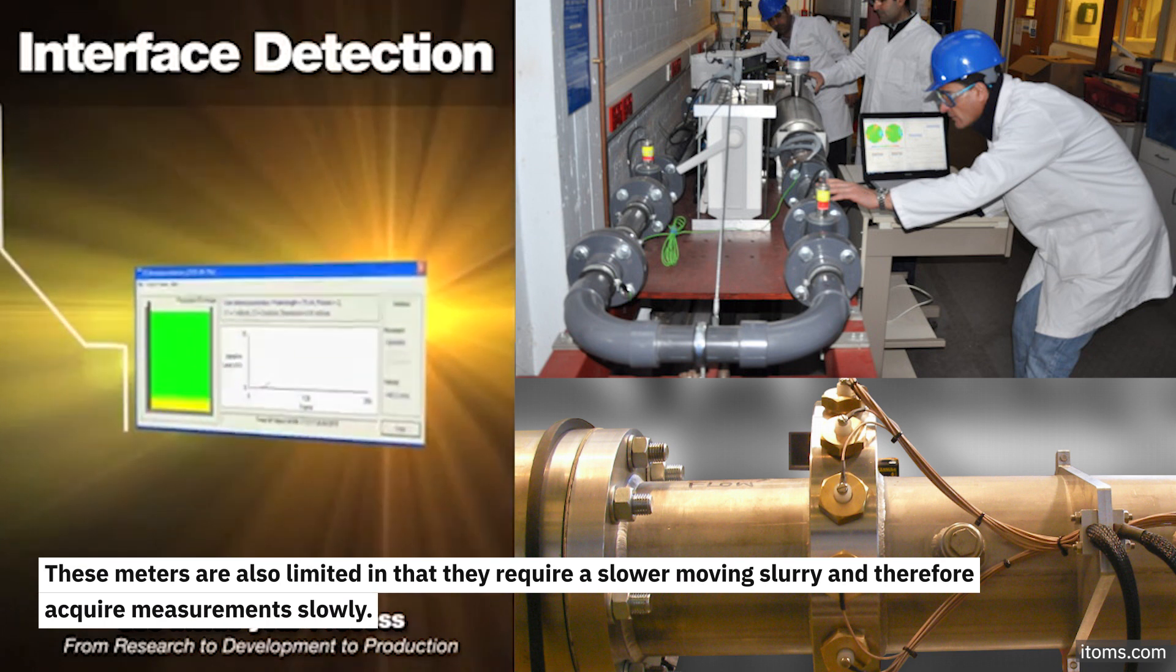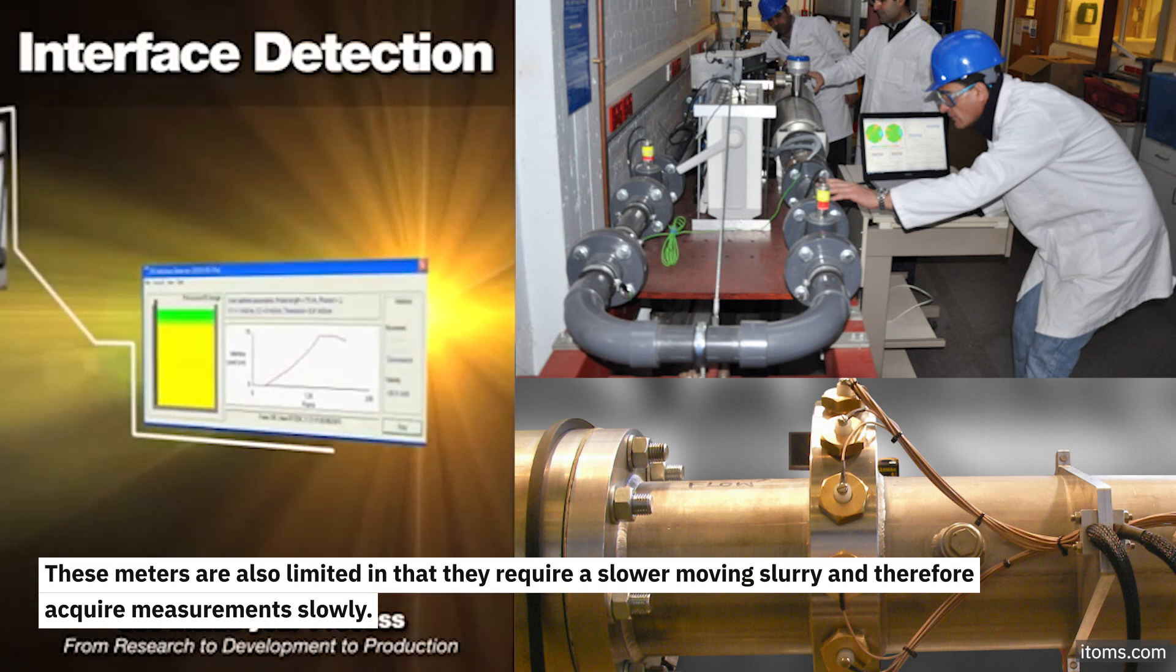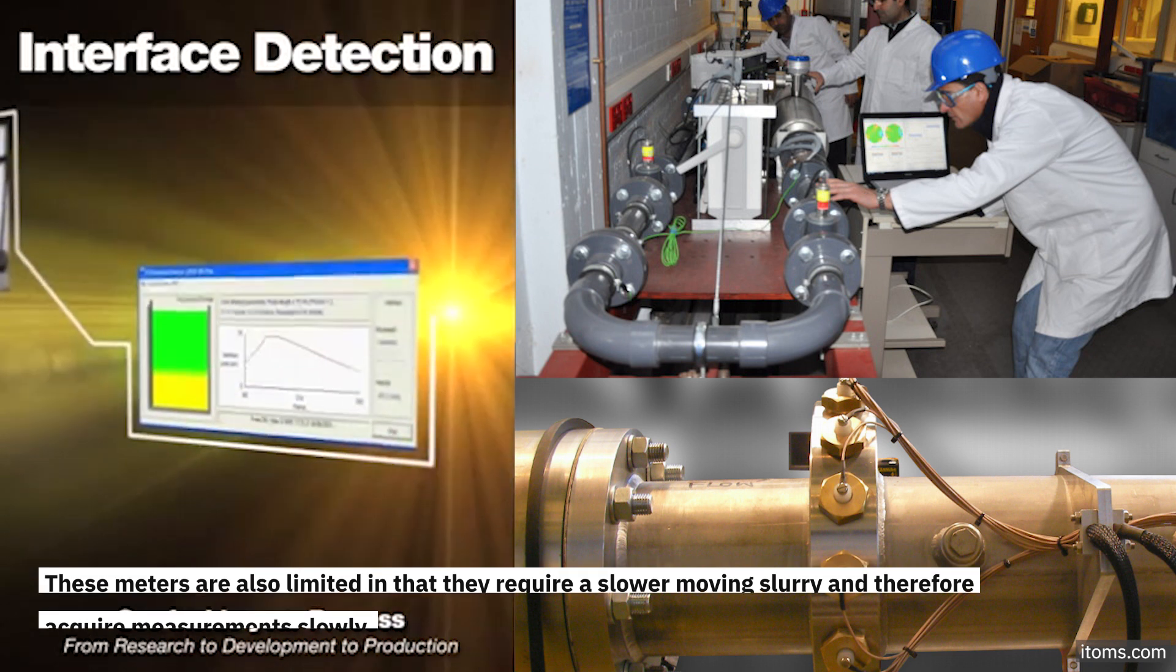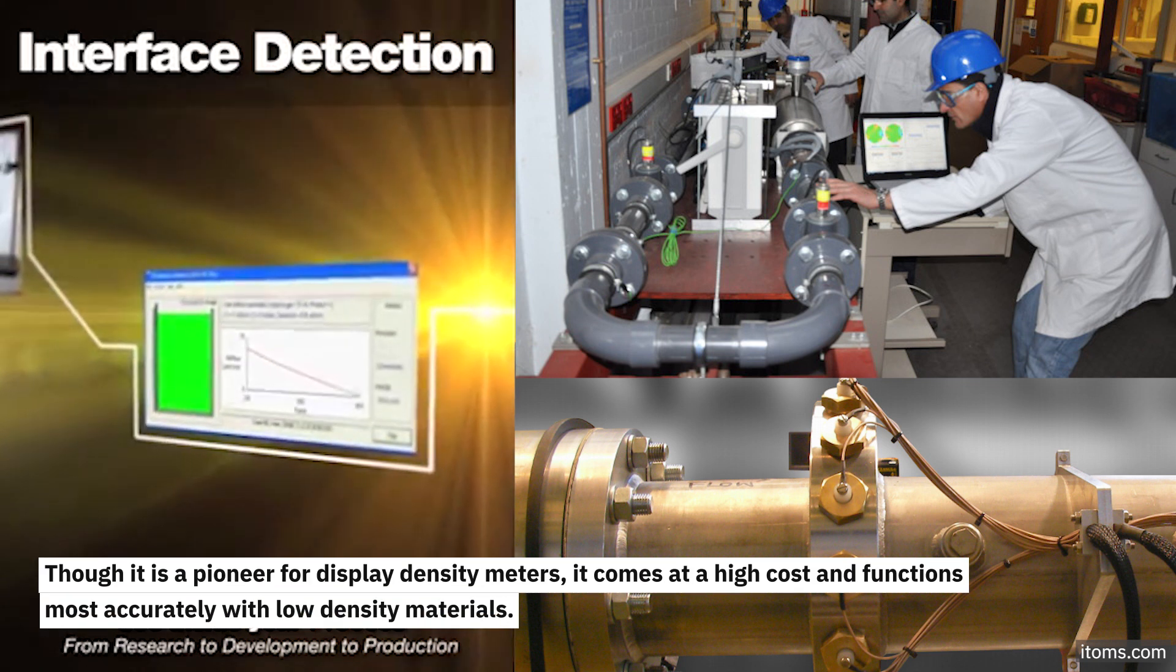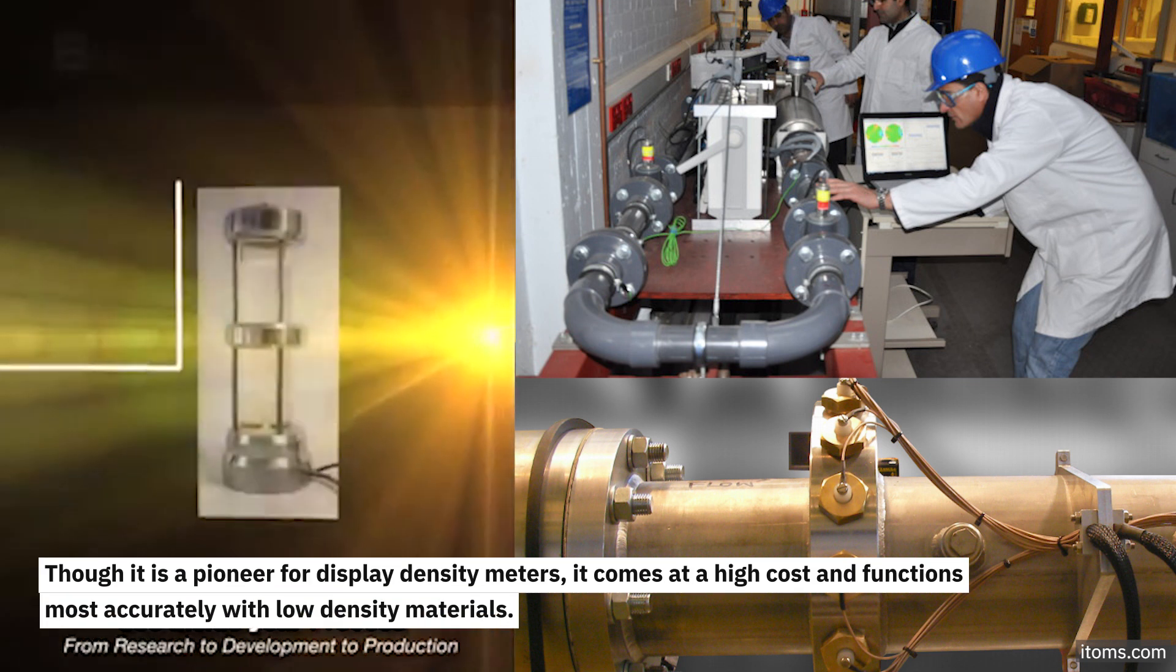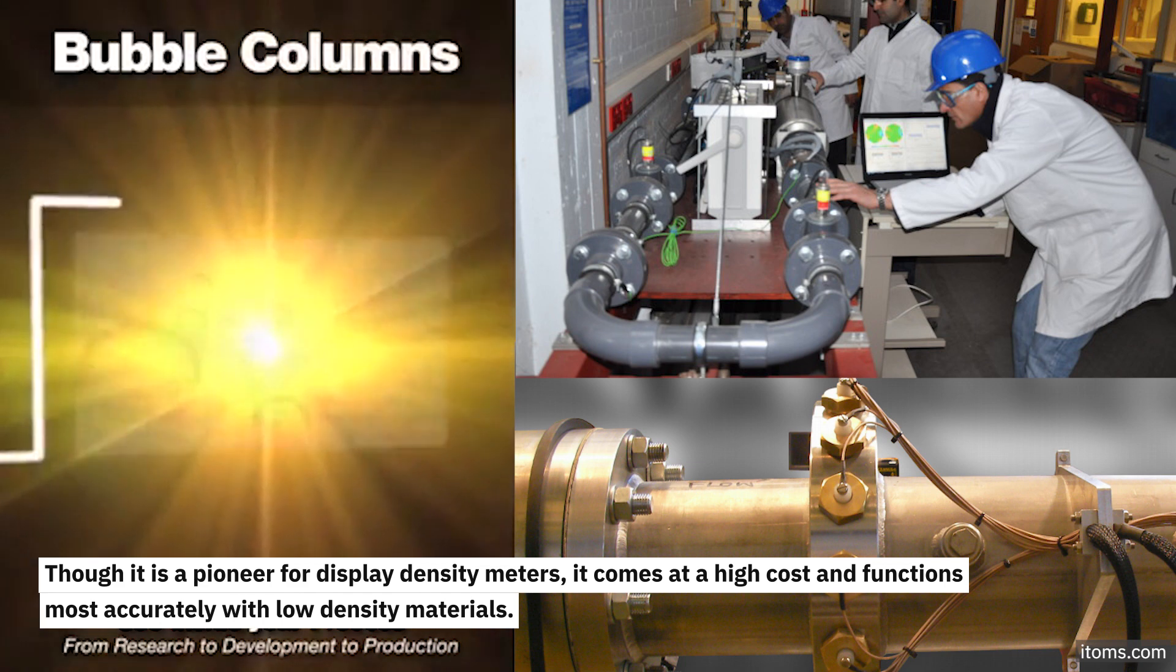These meters are also limited in that they require a slower-moving slurry and therefore acquire measurements slowly. Though it is a pioneer for display density meters, it comes at a high cost and functions most accurately with low-density materials.